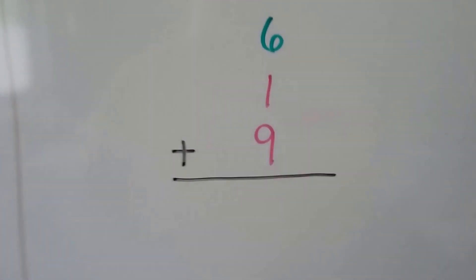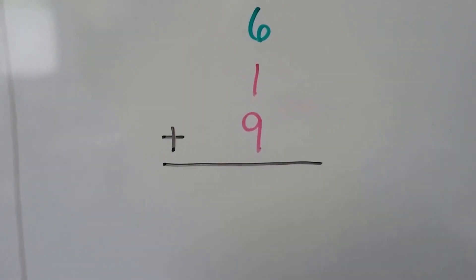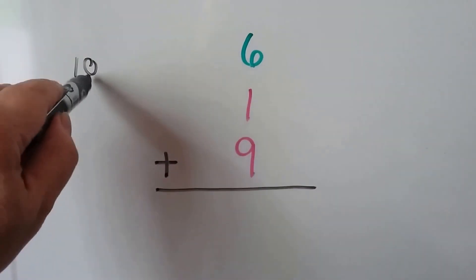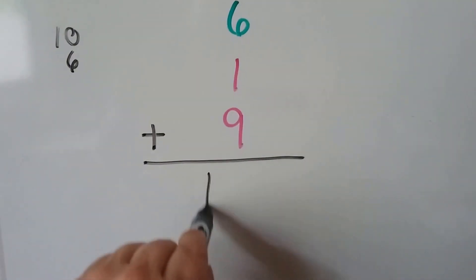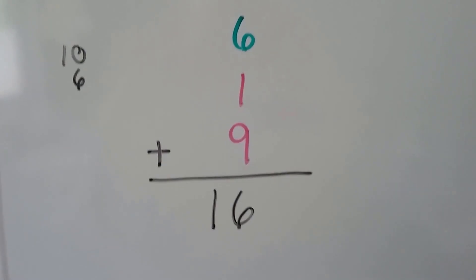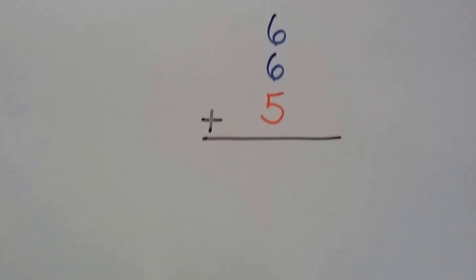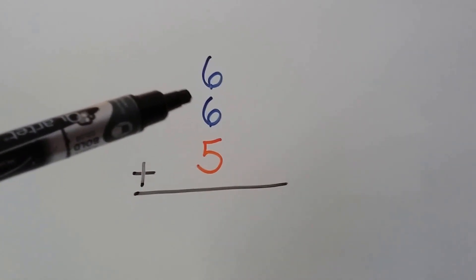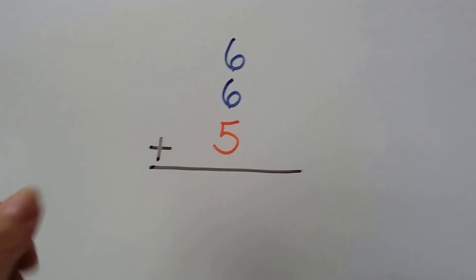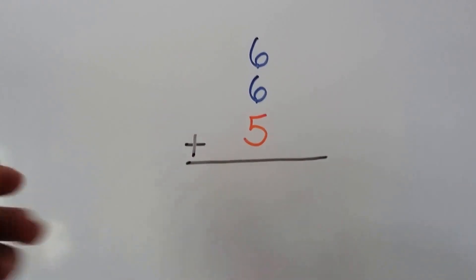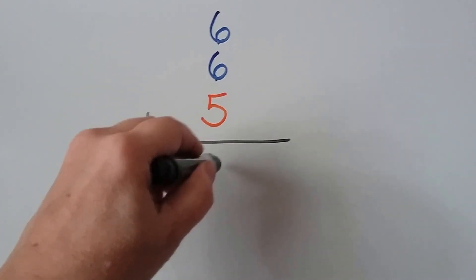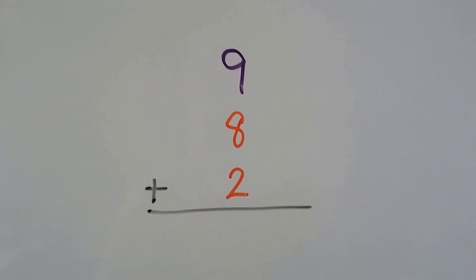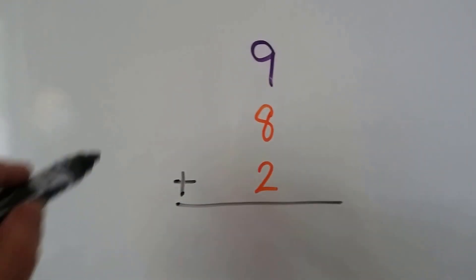I see the eight and the two, so that's ten, and five more — ten, eleven, twelve, thirteen, fourteen, fifteen. Let's try another one. Do you see some compatible numbers? I helped you with the colors — the nine plus the one makes a ten, and then we add six more, so we have ten plus six, which gives us sixteen. Now I see doubles — six plus six is twelve, and five more: twelve, thirteen, fourteen, fifteen, sixteen, seventeen.